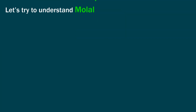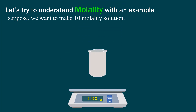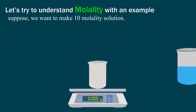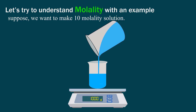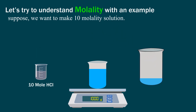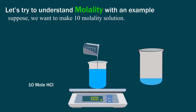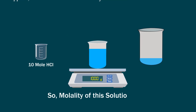Let's understand with an example. Suppose we want to make a 10 molality HCl solution. Take a weight balance and put a 1 liter empty beaker onto it. Don't forget to tare it down. Weigh precisely 1 kg of distilled water. Then take 10 moles of HCl and pour it into the beaker. Thus the 10 molality HCl solution is ready. Thanks for watching this video.